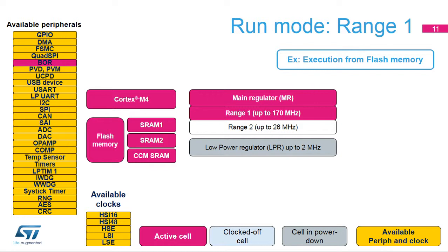In run mode, the CPU is clocked and programs can be executed from flash or SRAM memory. In range 1, the system clock is up to 170 MHz. In range 2, it is up to 26 MHz. By default, the SRAM clocks are enabled. They can be individually gated off during sleep mode by software. All peripherals can be activated in range 1.